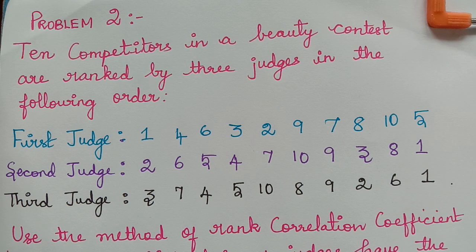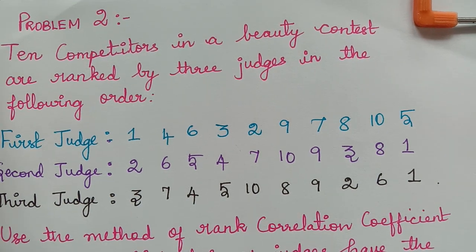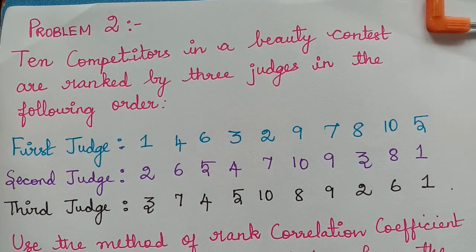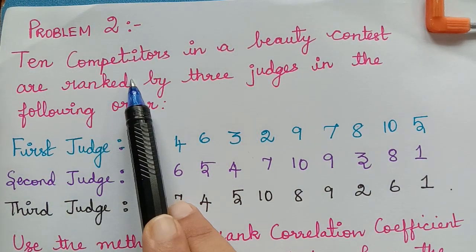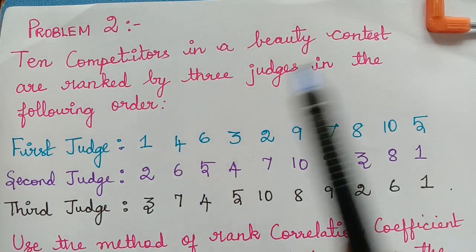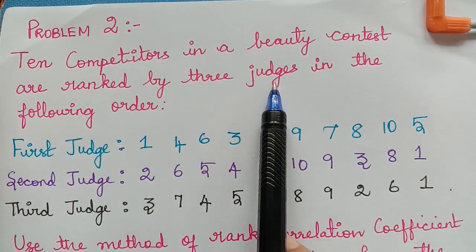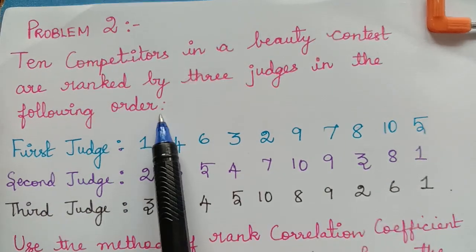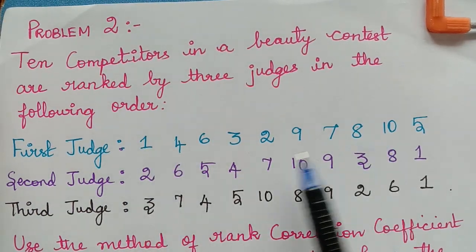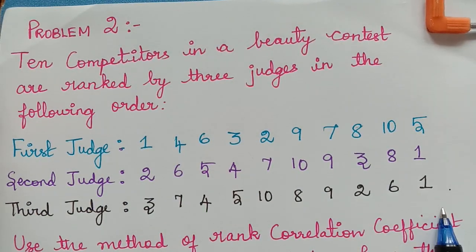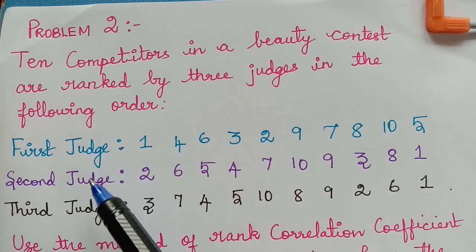Dear students, under the topic rank correlation, here we have the second problem. This is one of the significant problems that has appeared in many question papers. The question is: 10 competitors in a beauty contest are ranked by three judges in the following order. So we have 10 competitors and there are three judges.